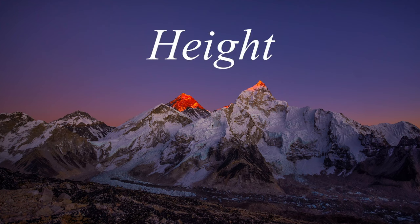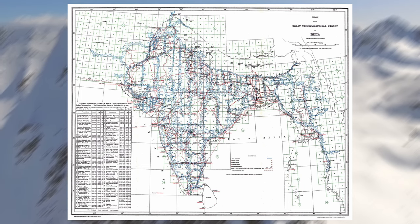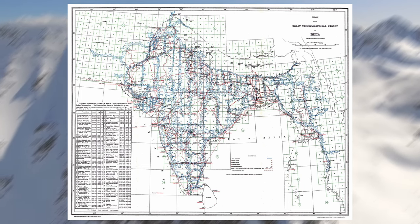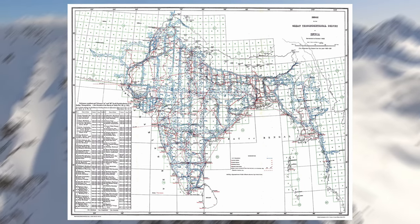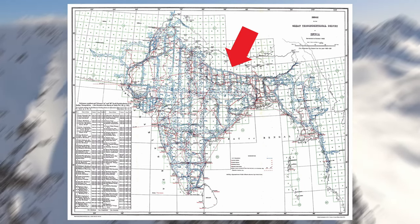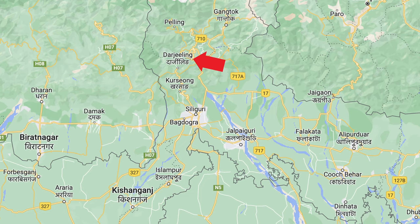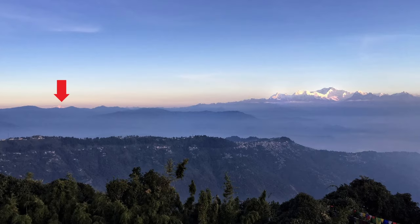During the early 1800s and spanning several decades, the Great Trigonometric Survey of British India undertook a comprehensive survey of the region that is now known as Mount Everest. Operating from a resort located 140 miles away in Darjeeling, India, they observed a remarkable expanse of snowy terrain, which they initially named Gamma, before later changing it to Peak B in 1847.